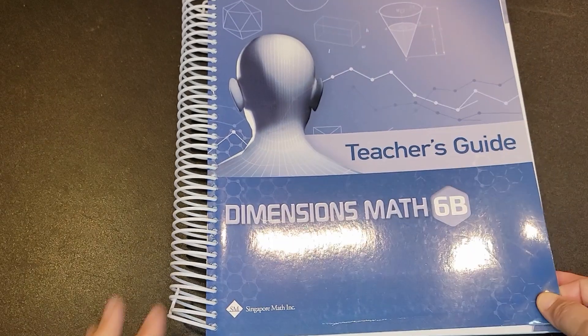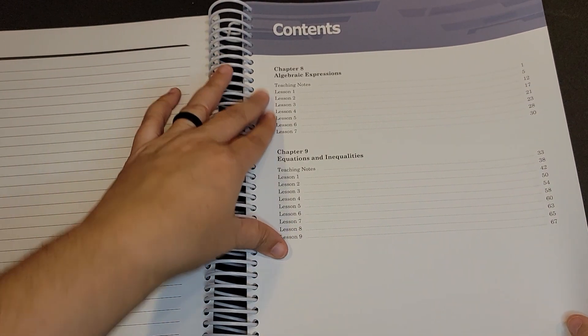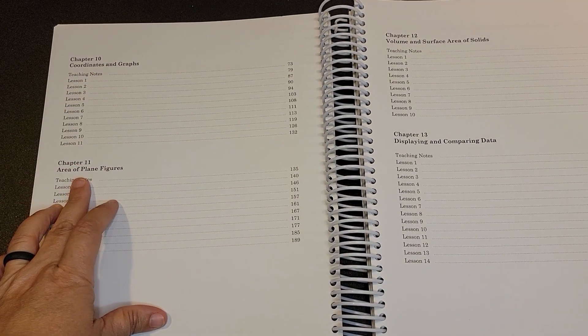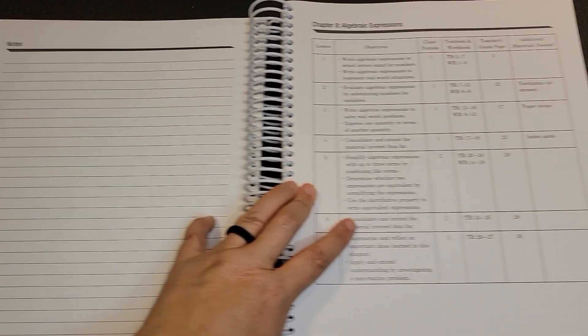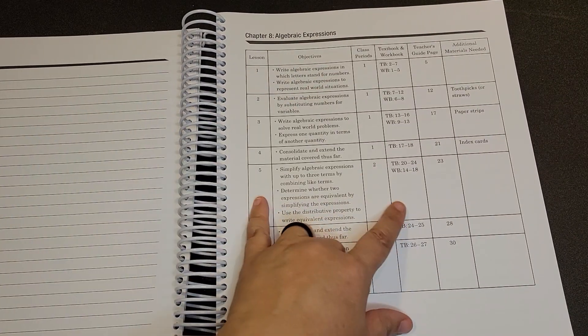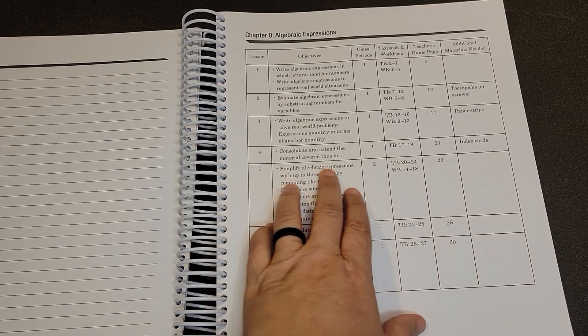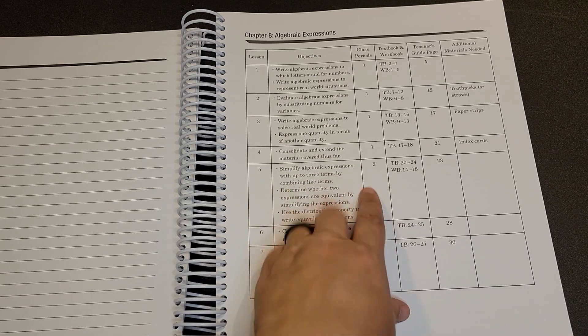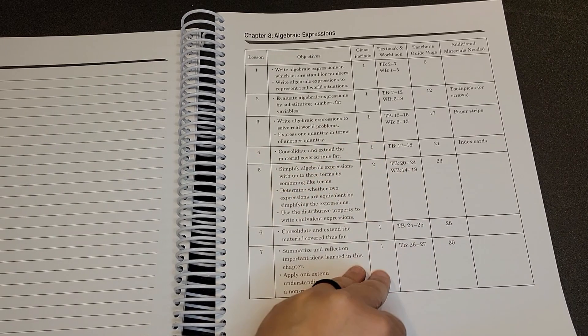Now let's look at B. When we get to B which is where we are starting algebra we are covering algebraic expressions, equations and inequalities, coordinates and graphs, area of plane figures, volume and surface area of solids, and displaying and comparing data. Again we will look at the class period that they are anticipating for each of these concepts. So for example simplifying algebraic expressions with up to three terms by combining like terms they're looking at two class periods to complete this section.